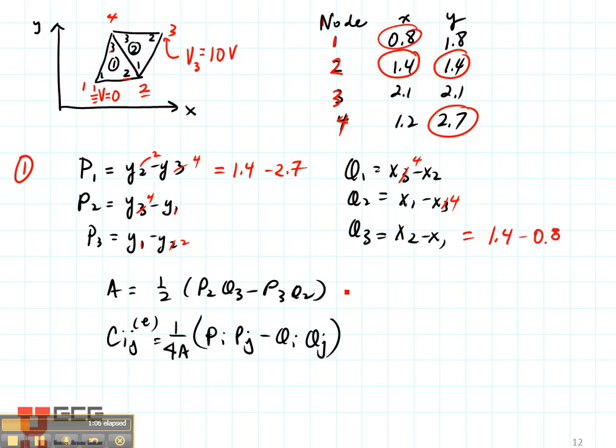So work these out and here are the values that I got: minus 1.3 here, 0.9, 0.4, minus 0.2, minus 0.4, 0.6. The area that I got was 0.35. Now why don't you take a minute and be sure that you got those values too.